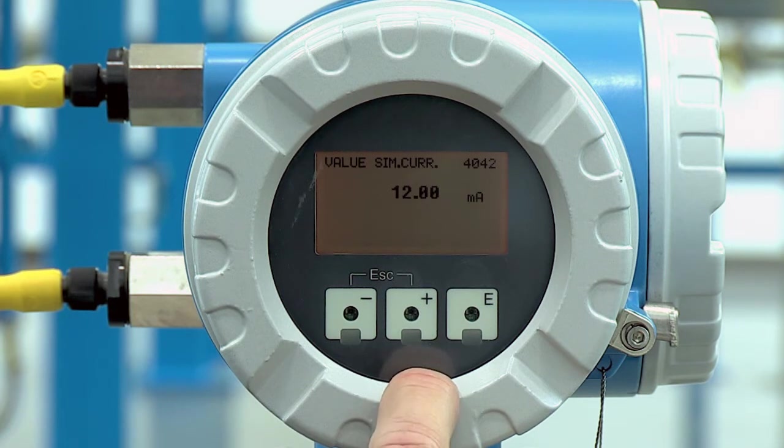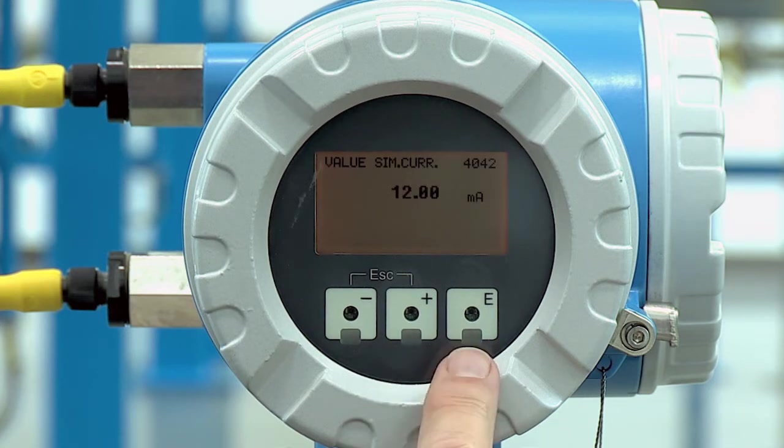Right now this meter is simulating an output of 12 milliamps which would be 50 percent. Typically you'd go check the signal at the PLC or whatever you're sending the signal to make sure it's correct.